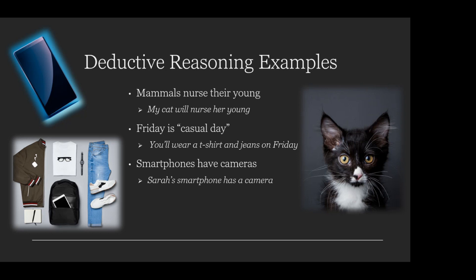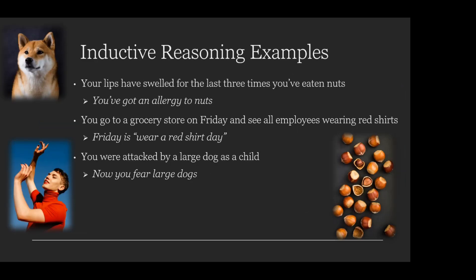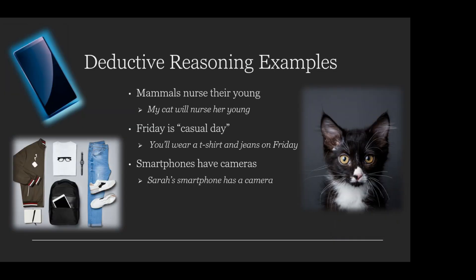Notice the distinction — specifically looking at the clothing example. In the inductive reasoning example, we notice everyone at the store wears red shirts on Fridays and assume that Friday is wear-a-red-shirt day. Whereas in the deductive example, we're already aware of the rule that Friday is casual day — perhaps a job told us that rule ahead of time. So deductive reasoning requires some kind of knowledge ahead of time, a specific rule, that you then apply to a situation.